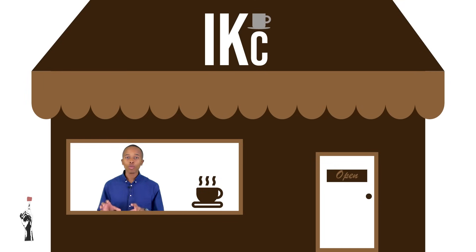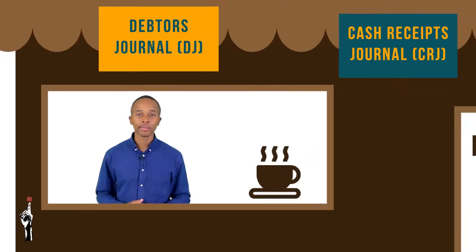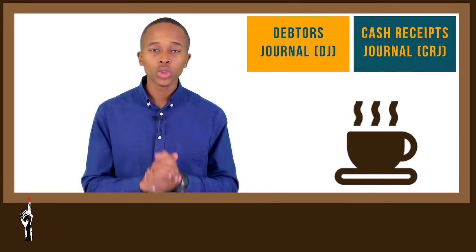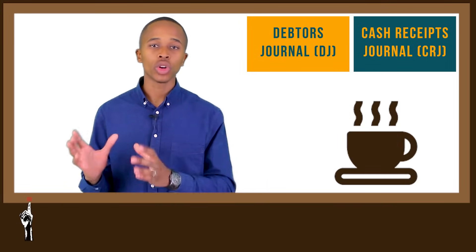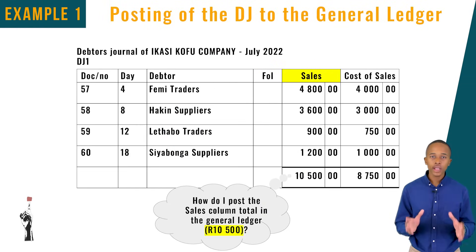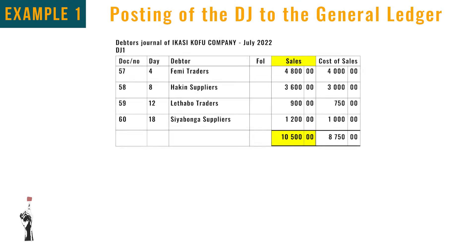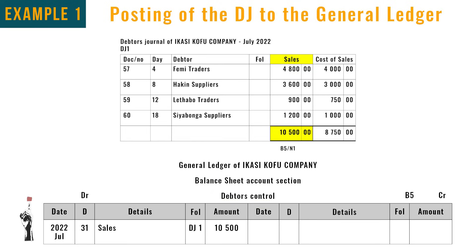To understand this concept we will look at the example from Ikasi Kofu Company's DJ and CRJ. We will look at the column totals to post on the general ledger. Firstly, the sales column of R10,500 — sales of R10,500 will be recorded in the debtors control as we sold the goods on credit. This will be on the debit side of the general ledger.